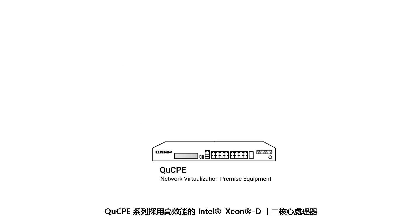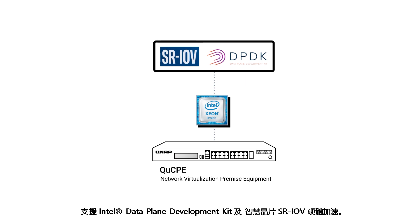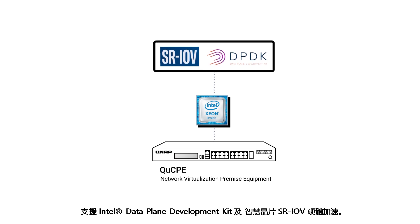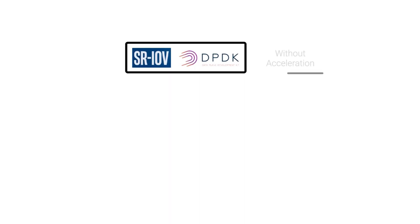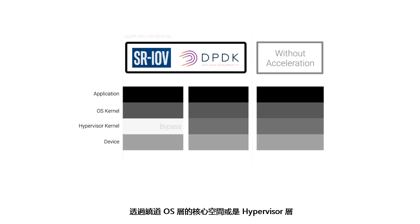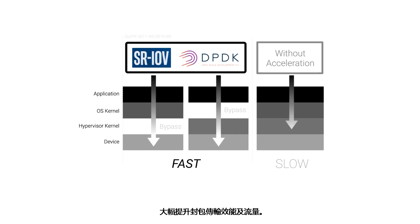The QCPE series adopts high-performance Intel Xeon D 12-core processors with Intel Data Plane Development Kit and SmartNIC SRIOV hardware acceleration technology. Through bypassing the operating system kernel or hypervisor kernel space, this helps speed up packet processing performance and throughput.